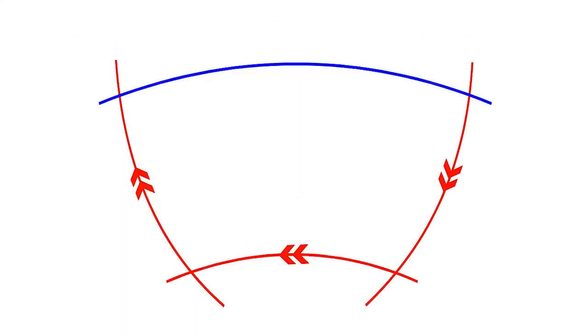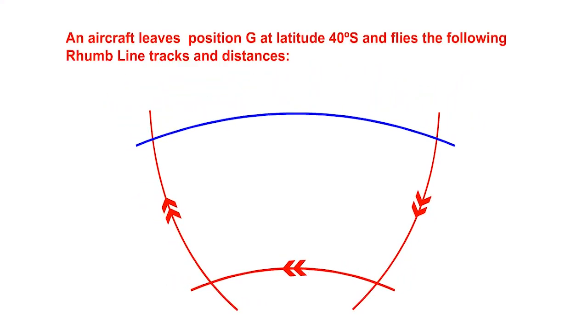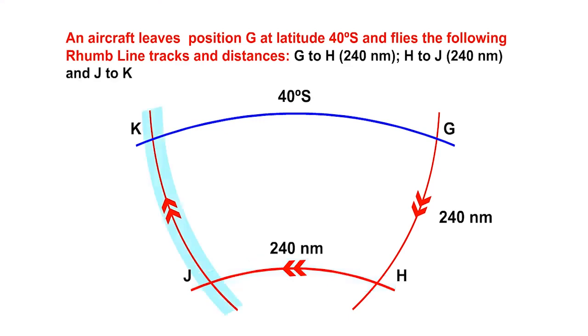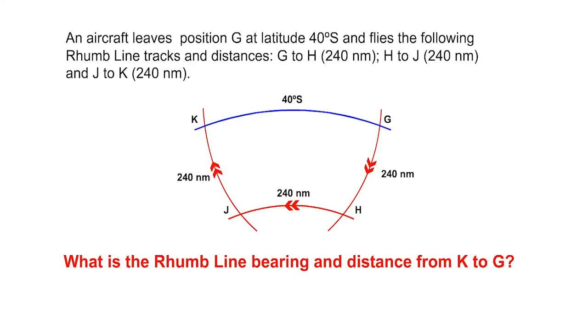You need to be able to solve questions where you are given departure at one latitude and have to solve it for another. Consider this question. An aircraft leaves position G at latitude 40 south and flies the following rhumb line tracks and distances. G to H, track 180 true, distance 240 nautical miles. H to J, track 270 true, distance 240 nautical miles. What is the rhumb line bearing and distance from K to G?